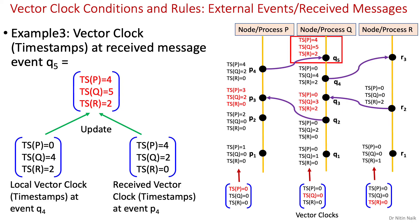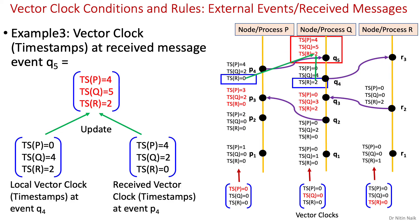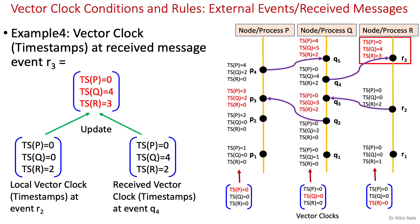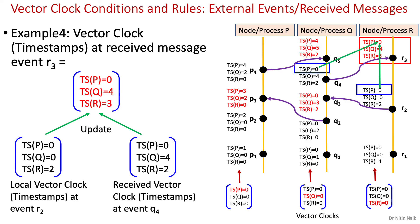Another event Q5 is a received message event on node Q. For updating the vector clock at Q5, we need to increment the value of the local timestamp of Q by 1 in the vector. Then compare the timestamps of P in the local vector and received vector and update it by the maximum value. Similarly, compare the timestamps of R and update by the maximum value. Finally, event R3 is a received message event on node R. For updating the vector clock at R3, increment the local timestamp of R by 1, then compare timestamps of P and Q in the local vector and received vector and update each by the maximum value.